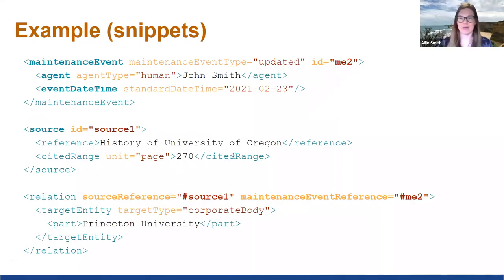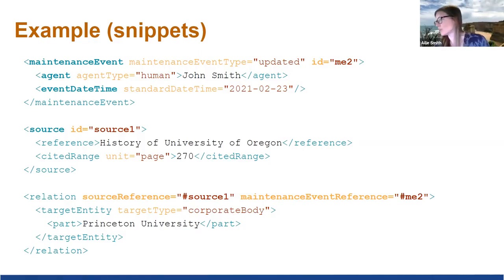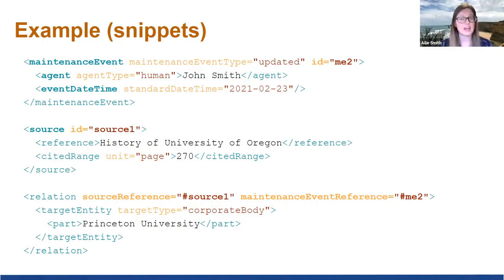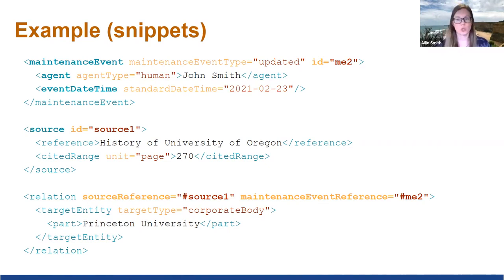Using the new maintenance event reference, source reference, and convention declaration reference attributes, you can point from an element in the descriptive section back to a maintenance event, source, or convention declaration entity in the control section. You can also refer to more than one of these from a single element. In this example, a maintenance event shows John Smith made an update on 23rd February this year, pointing to the history of the University of Oregon as source. A relation further down in the record points to the source of this information and who updated the record — so you can trace that, which is very useful.